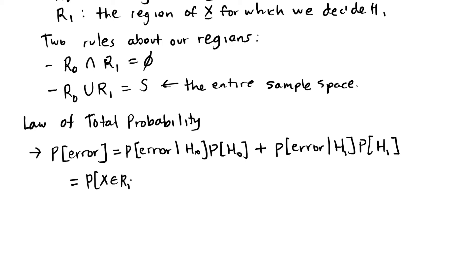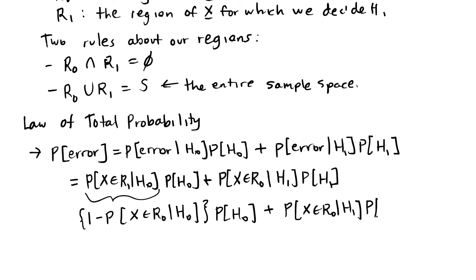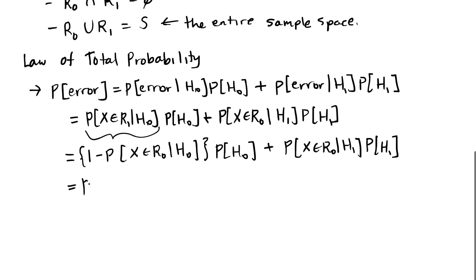In terms of our decision region, we can write it like this. So I'm going to rewrite this because I can take this probability, and I can write it as one minus the probability that X is in region zero. X in R1 and X in R0 are complementary. So I can write it like this, and that allows me to write this as a sum of the probability of H0 plus two different terms here.